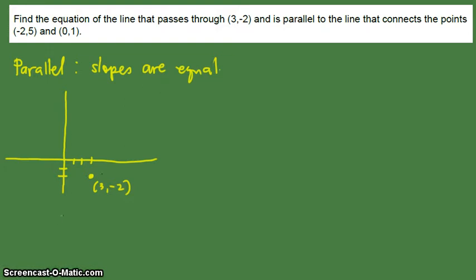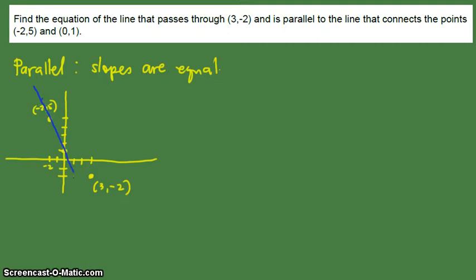So how will we know? It says this line, or the line that passes through (3, -2), is parallel to the line that connects the points (-2, 5) and (0, 1). So we have to see what is the orientation of the line connecting (-2, 5) and (0, 1). The first point is at (-2, 5) — that's negative 2 on x and 5 on y. The other point is (0, 1) — 0 on x and 1 on y. So the line that connects (-2, 5) and (0, 1) is this line.